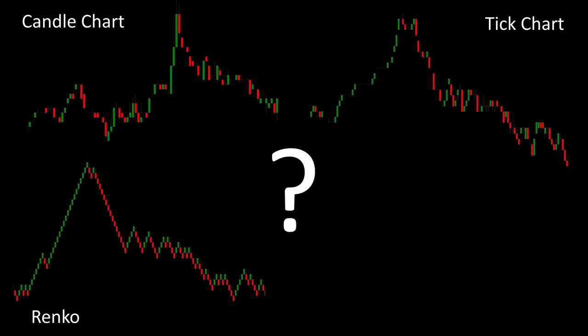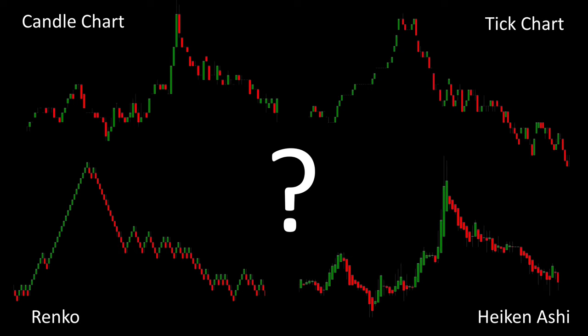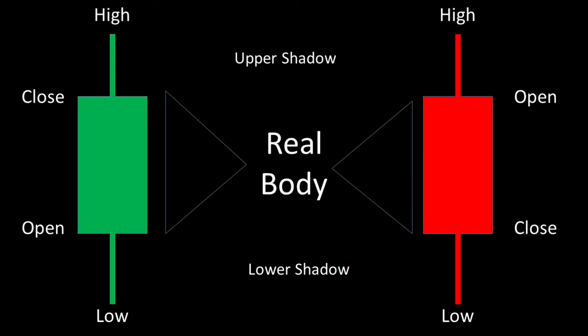We know the normal candle chart, tick chart, Renko chart, or Heiken Ashi. When I started trading 11 years ago, I initially had great problems extracting crucial information from a candle display. A candle offers 4 information points: open, high, low and close. The high and low are always the same for both candles, while with a bullish candle the close is always above the open; it is exactly the other way around with the bearish candle.